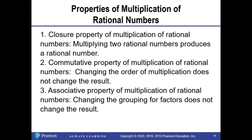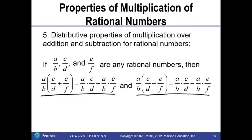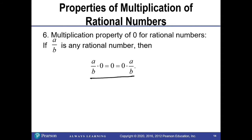Let's talk about the properties of multiplication of rational numbers. First, the closure property: multiplying two rational numbers gives a rational number. Second, the commutative property: changing the order of multiplication does not change the result. Third, the associative property: changing the grouping of factors does not change the result. Fourth, the multiplicative identity: multiplying any number by one gives that number. We can also distribute with rational numbers, and multiplying by zero gives zero.